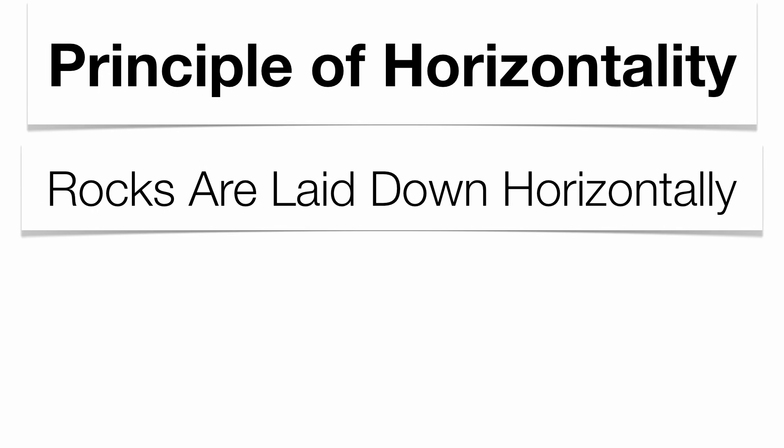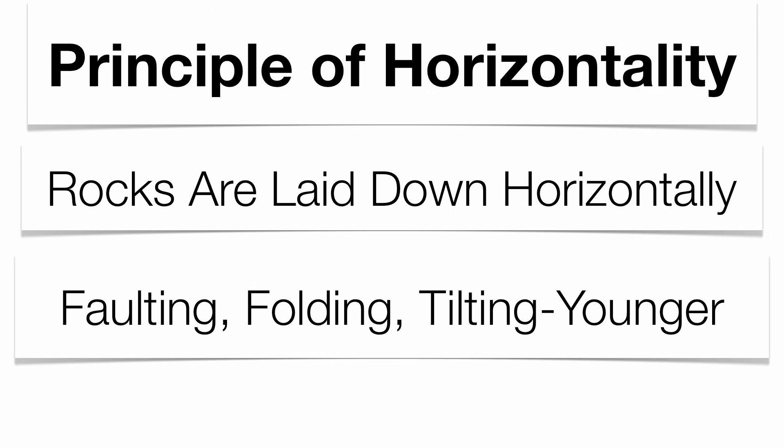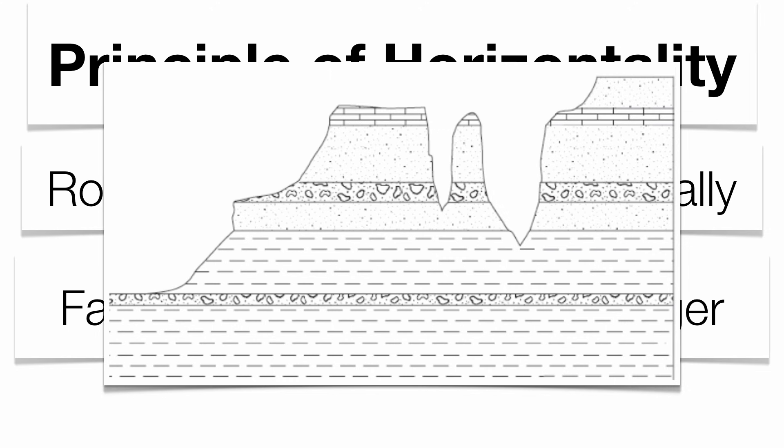The principle of original horizontality states that rocks are laid down in horizontal layers — that's how sedimentary rocks are deposited. Any faulting, folding, or tilting is always going to be younger than the rock itself, because the rock has to be laid down first before it gets altered. You can see the horizontal rock in this picture — no deformation, oldest on the bottom, youngest on top.